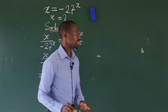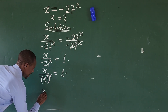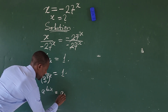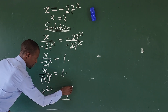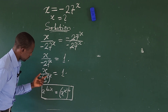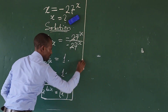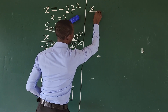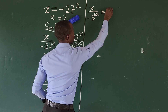Now we apply the law of indices, which says that a to the power of b, all raised to the power of x, equals a to the power of bx. Using that law, we can rewrite our expression as x over minus 3 to the power of 3x equals 1.